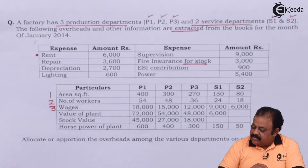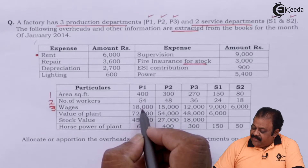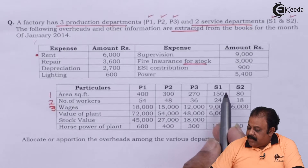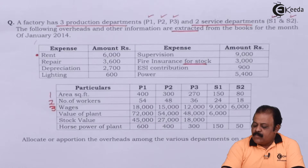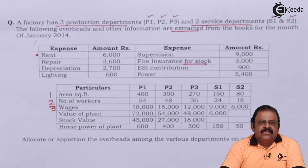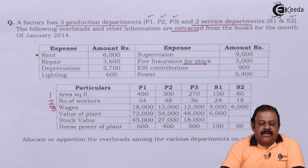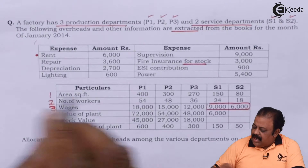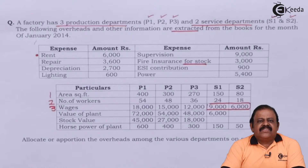Third, we have wages: production department 1 — 18000, P2 — 15000, P3 — 12000, service department 1 — 9000, service department 2 — 6000. Wages of production departments will not be treated as overheads; they are charged as direct labor. However, in case of service departments, the amount of wages will be treated as overheads and divided among departments accordingly.